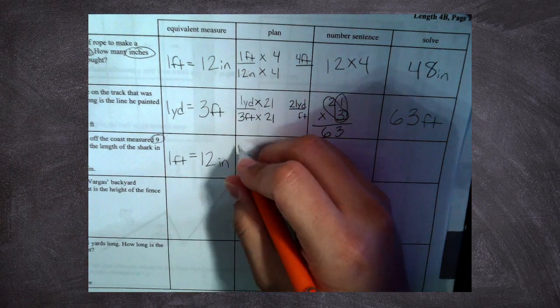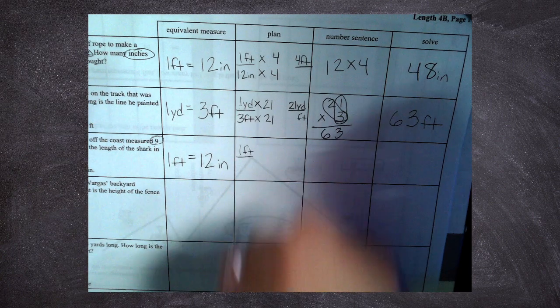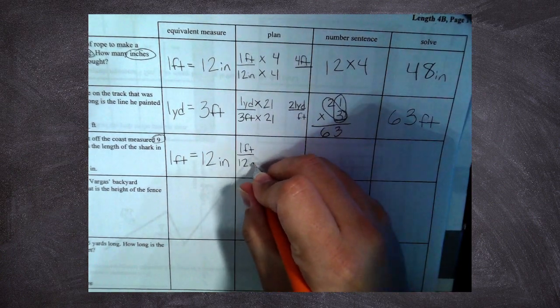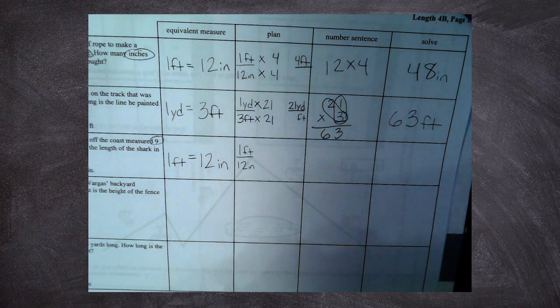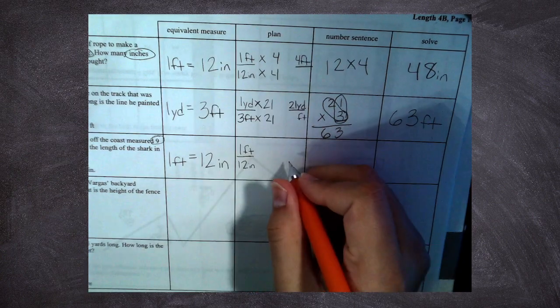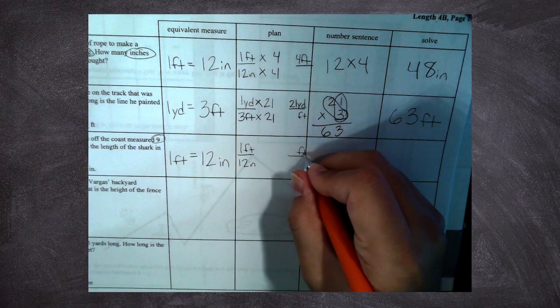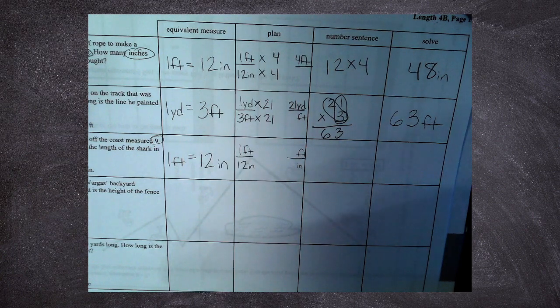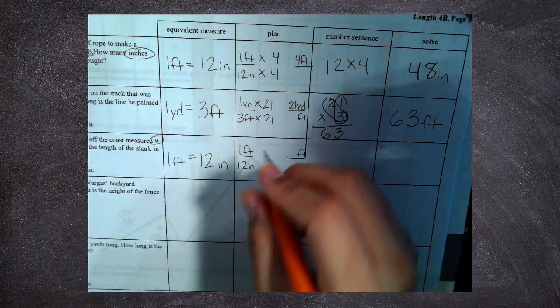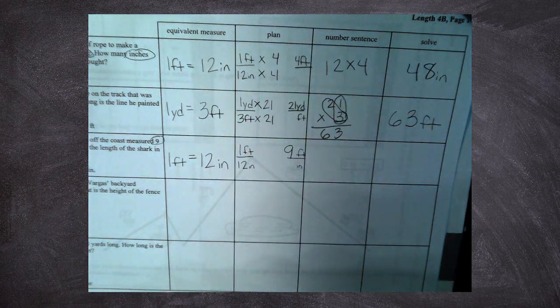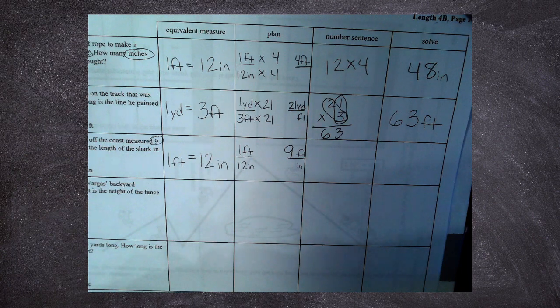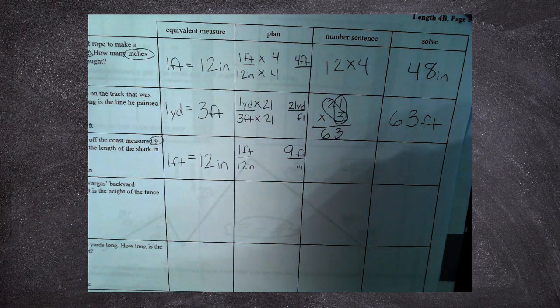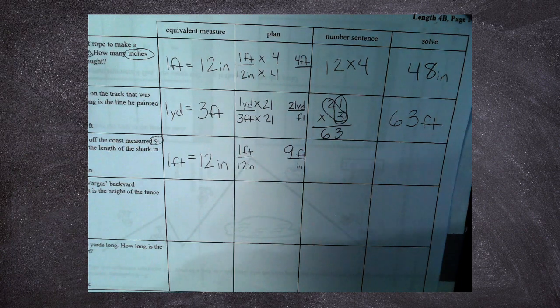I'm going to put the feet on top, inches on the bottom. One foot is the same thing as 12 inches. But when they measured the shark, the shark was not just one foot. Since I put feet on the top here, the shark when they measured it was actually nine. I need to figure, or sorry, not nine inches, nine feet. I was getting ahead of myself there.